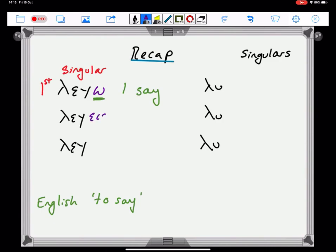Lego, legeis, legeis. I say. You say. He, she, it says. But I said I was going to use luo to teach you with most of the time. The same endings apply. Luo, lues, luei. So if you know those, then you know your basic singular verb endings.